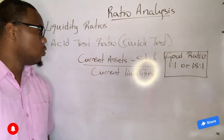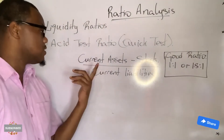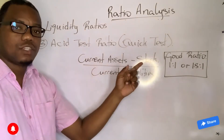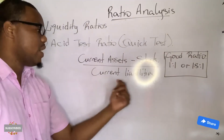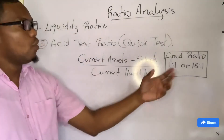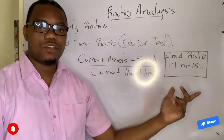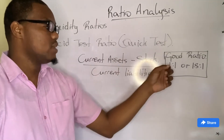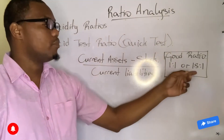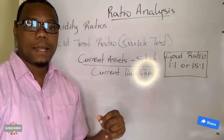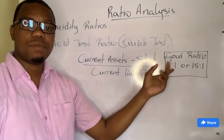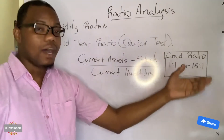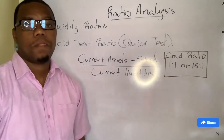The formula for the acid test ratio is: current assets minus stock (closing stock) divided by current liabilities. The answer is again in ratio form. A good acid test or quick test ratio is 1:1 or 1.5:1 — you want your assets to be able to cover your liabilities one to one and a half times.